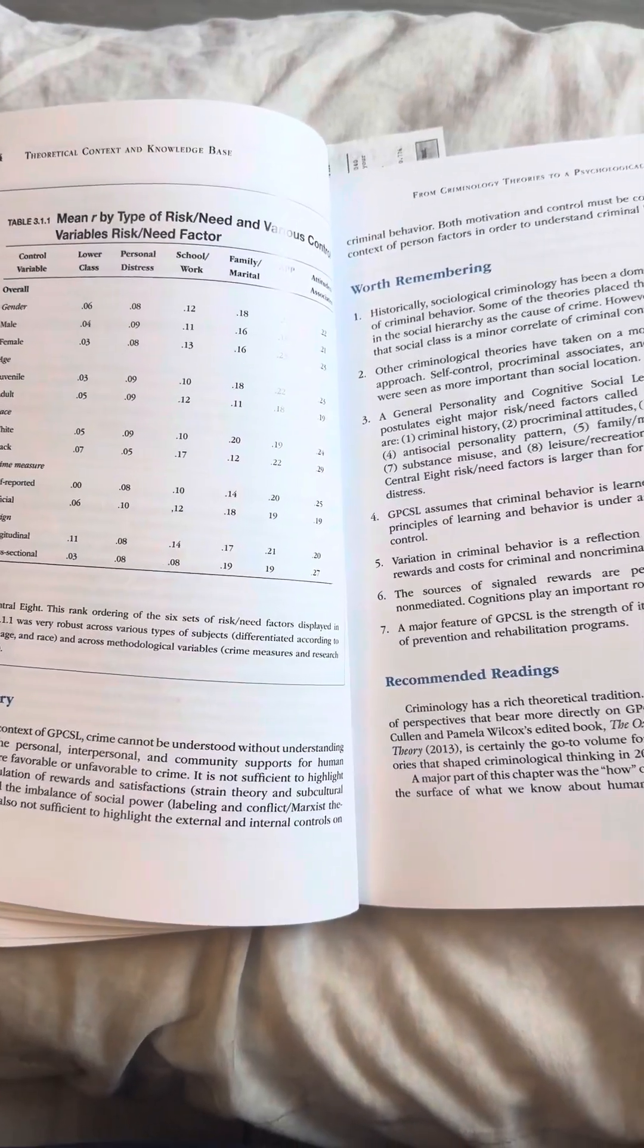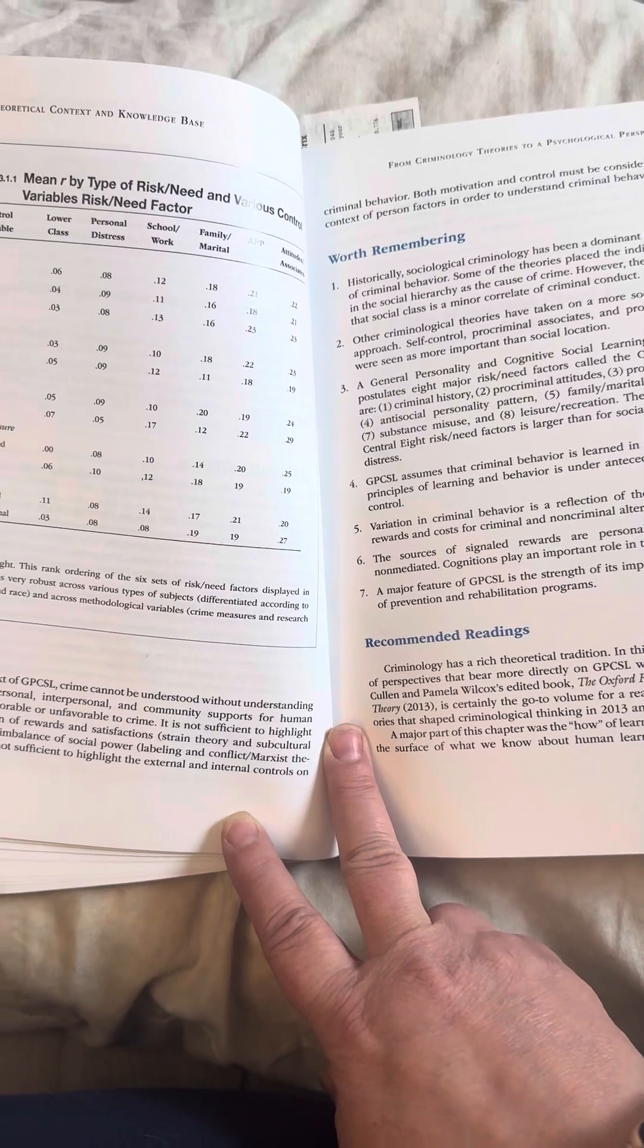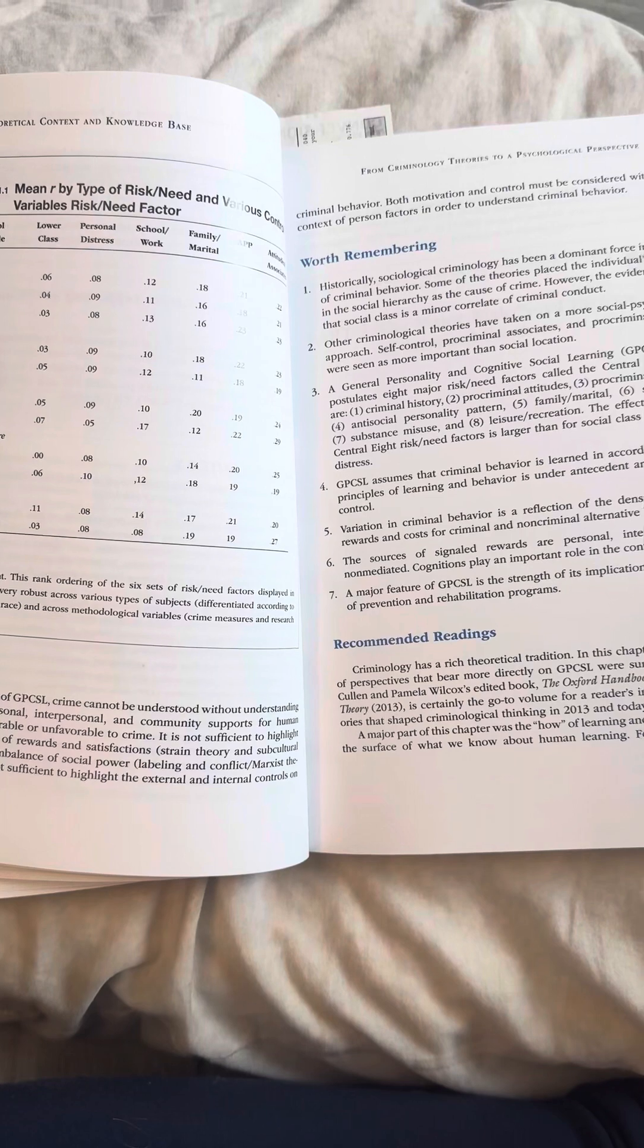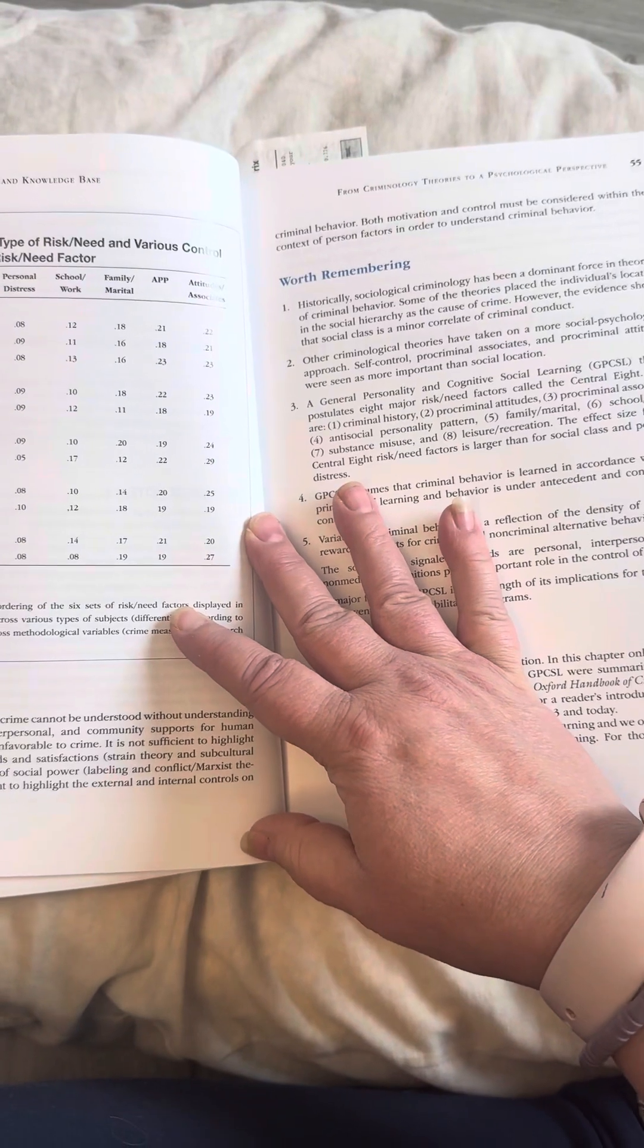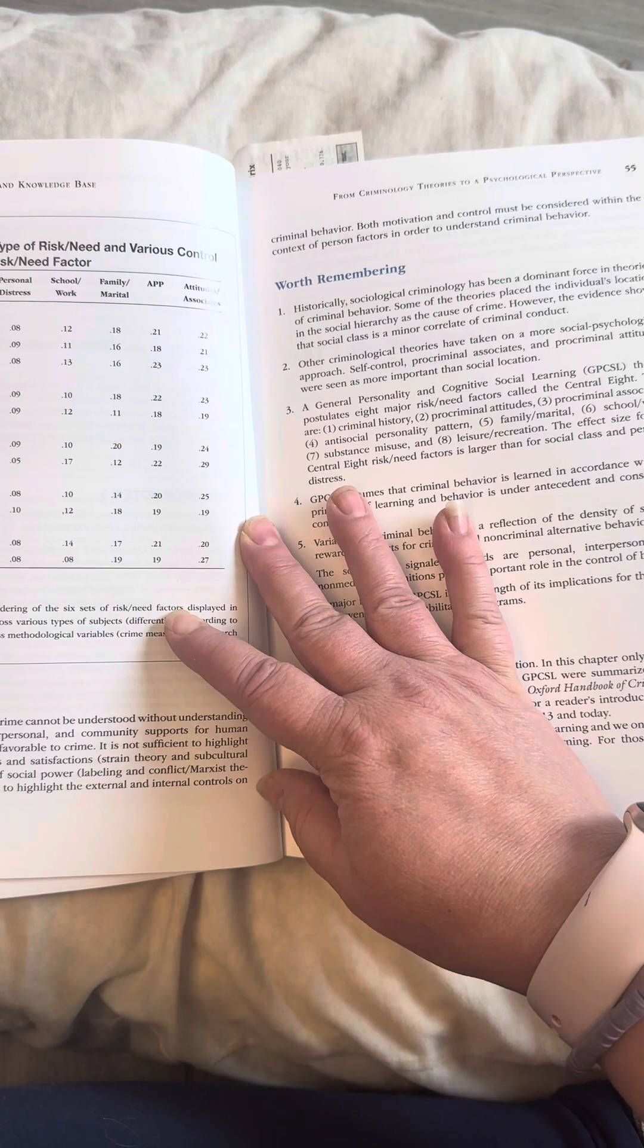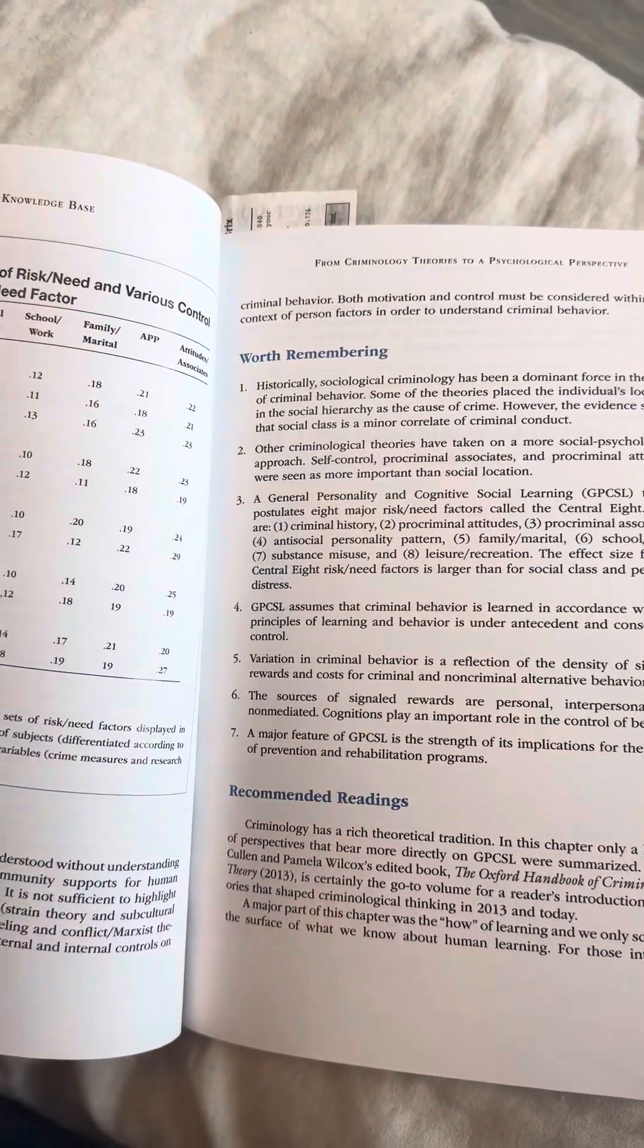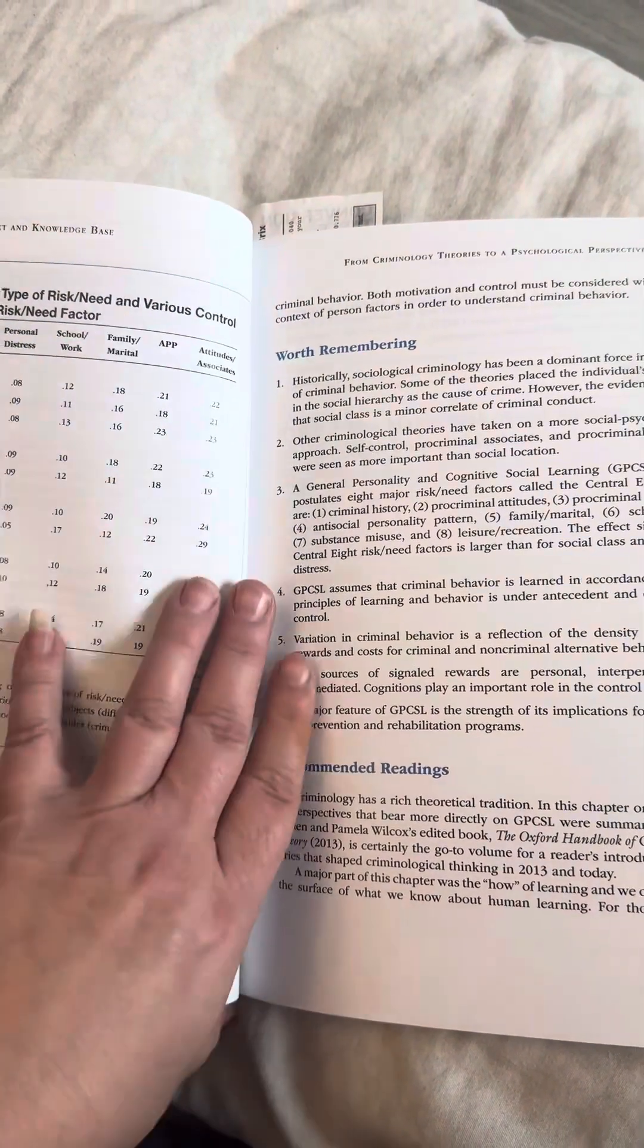In the context of GPCSL, crime cannot be understood without understanding whether the personal, interpersonal, and community supports for human behavior are favorable or unfavorable to crime. It is not sufficient to highlight the accumulation of rewards and satisfactions, strain theory and subculture theory, and the imbalance of social power, labeling and conflict Marxist theories. It is also not sufficient to highlight the external and internal controls on criminal behavior. Both motivation and control must be considered within the context of person factors in order to understand criminal behavior.